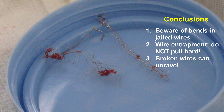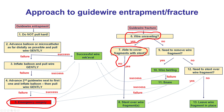In summary for this case: there was wire entrapment, we pulled, the wire fractured, it unraveled, we could not cover it — it was all the way in the aorta — and the patient had to go to surgery. The key lesson: if there is wire entrapment, do not pull hard. If the wire breaks, it can unravel, and this is what can happen.